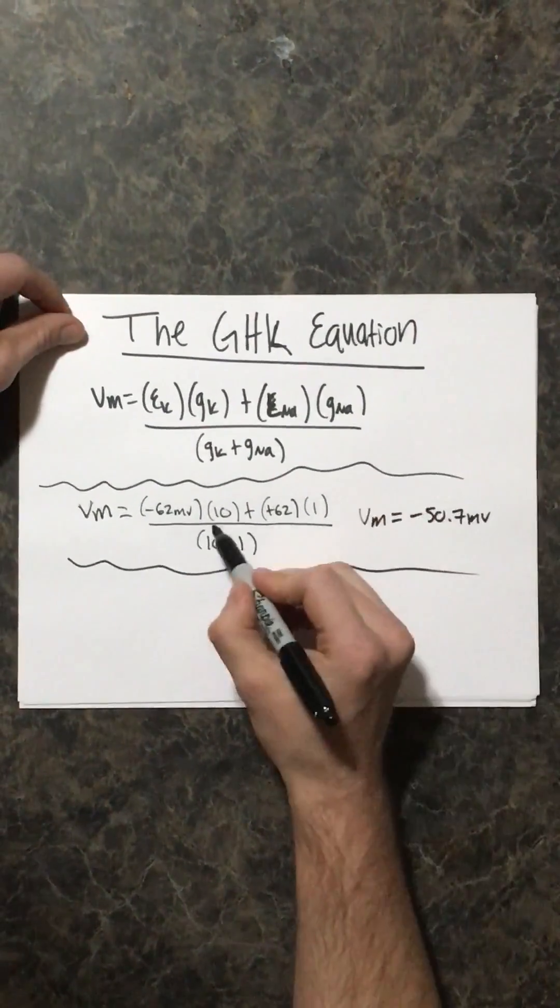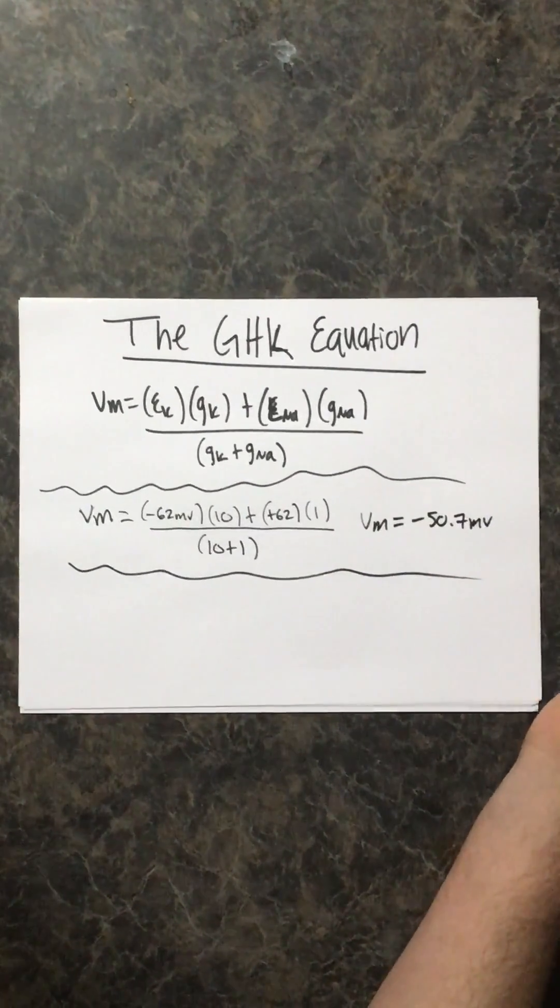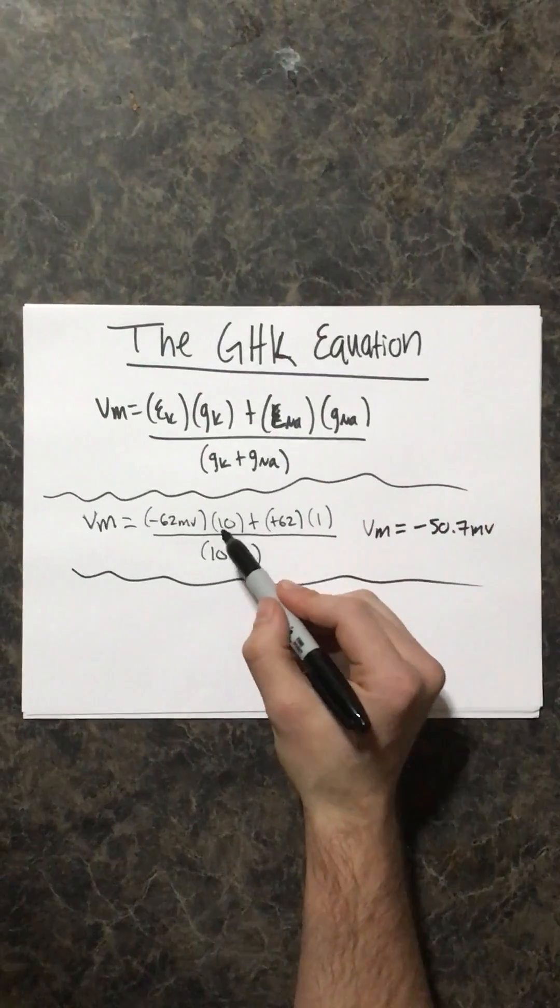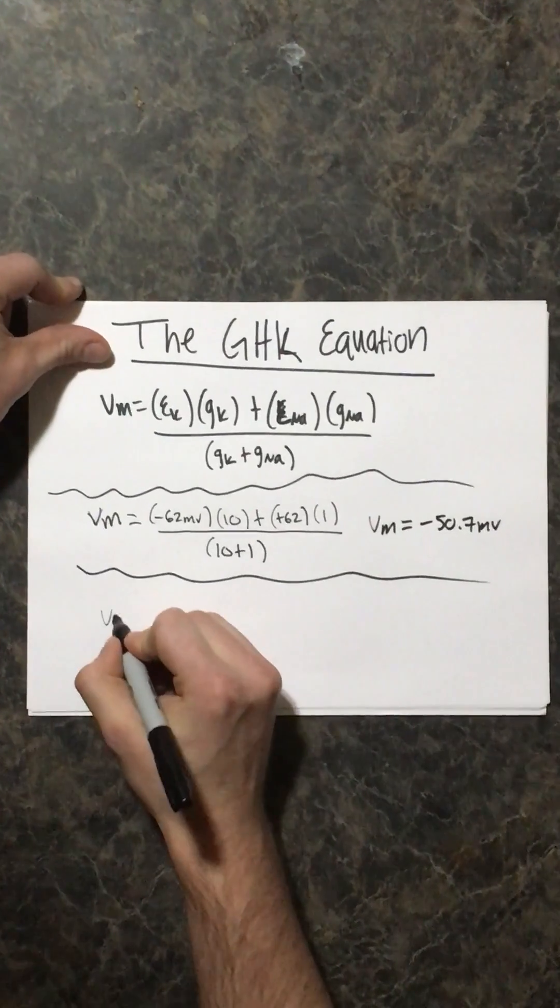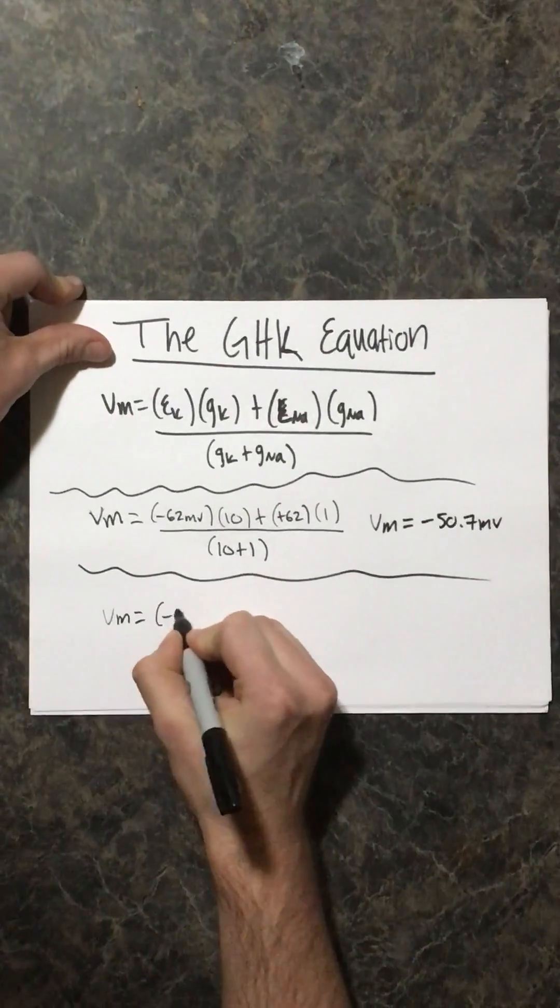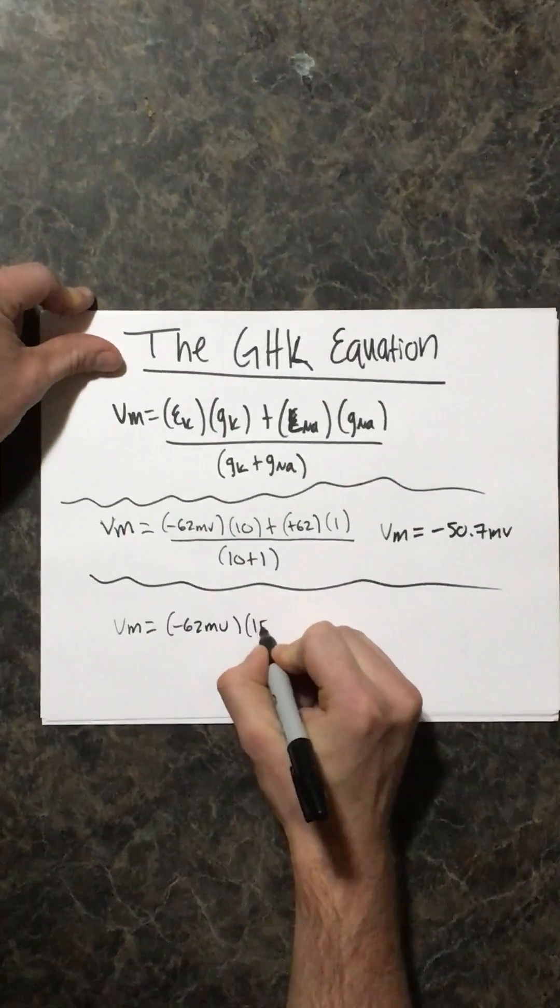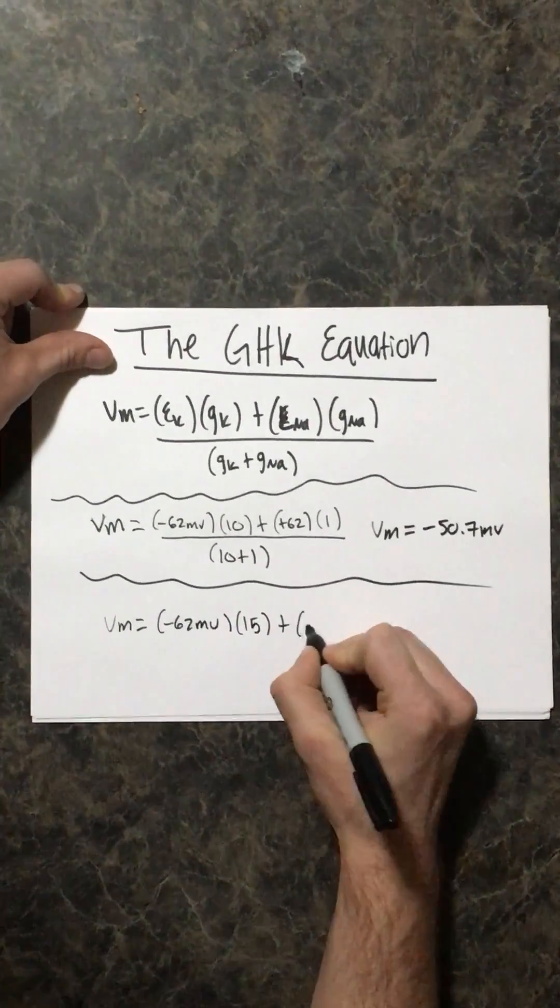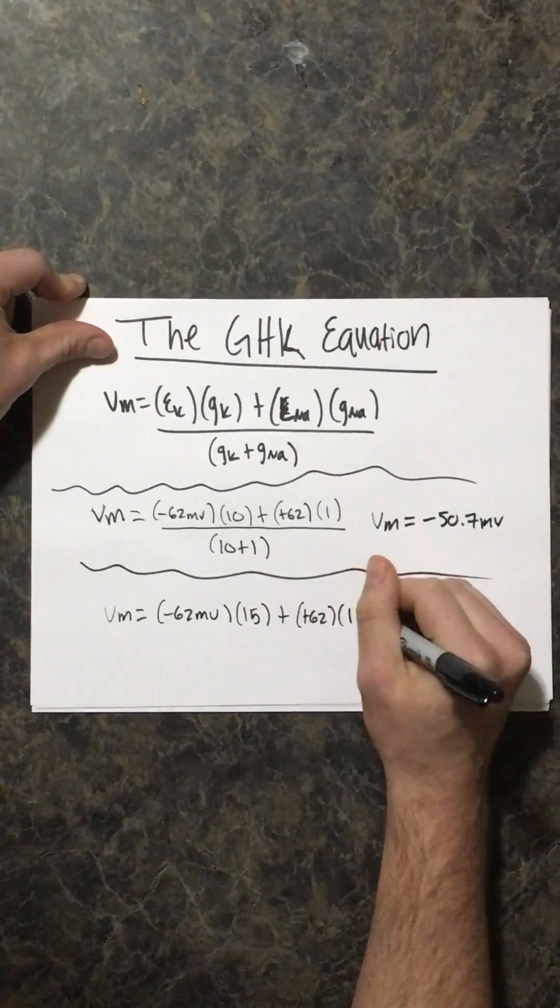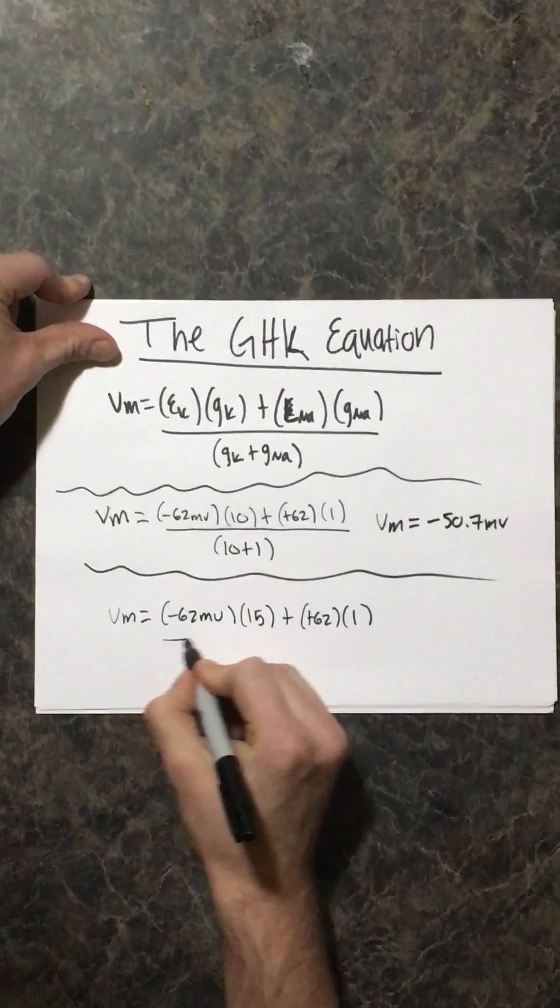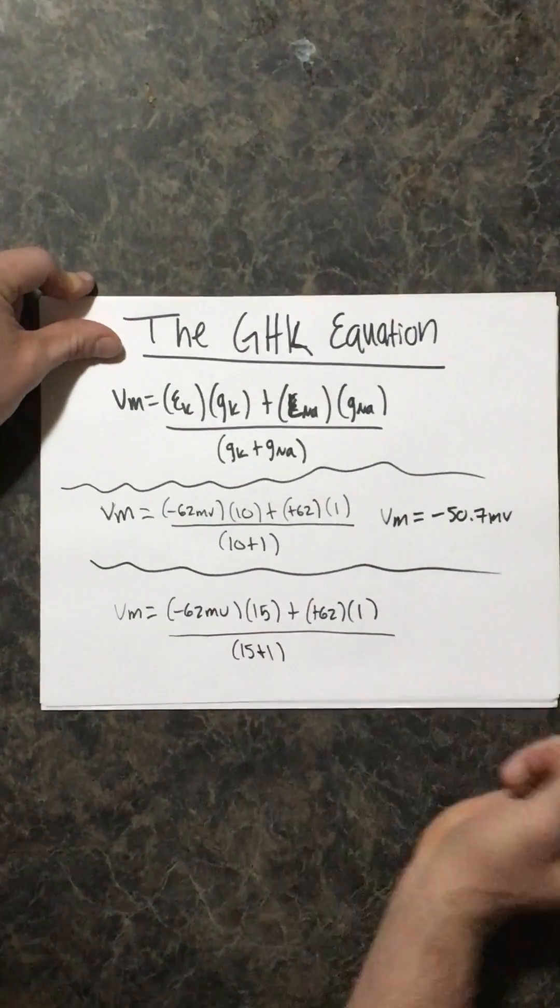You can get a ratio for conductance. Meaning, let's say in this next problem that you have a conductance ratio of potassium is 15 times more permeable to the membrane than sodium. So you do V sub M, or resting membrane potential, equals negative 62 millivolts and a conductance of 15, plus positive 62 millivolts, equilibrium potential of sodium, and conductance of one. And you sum those two together.